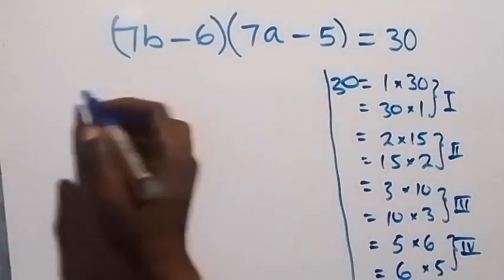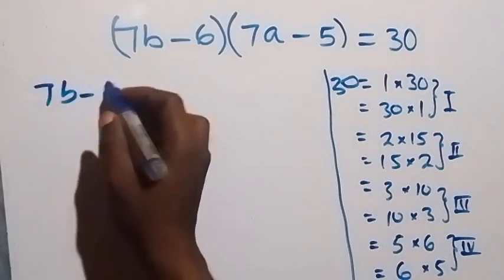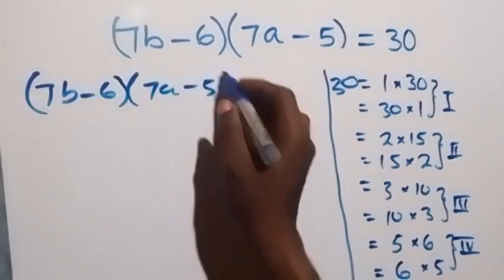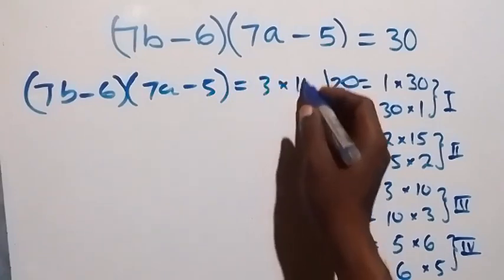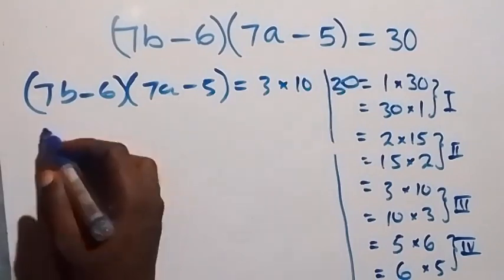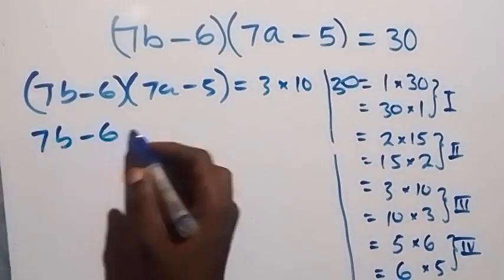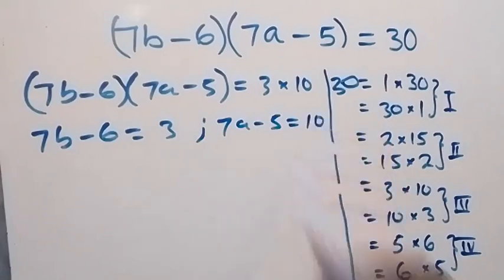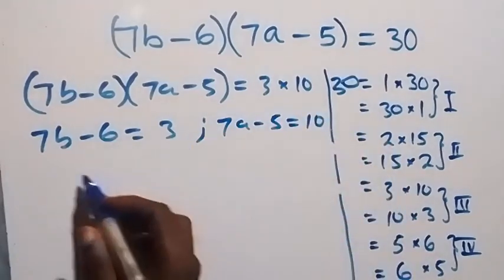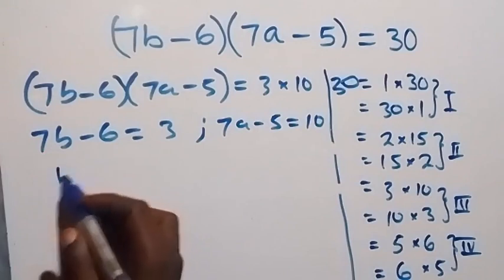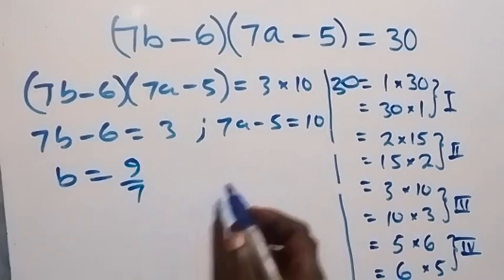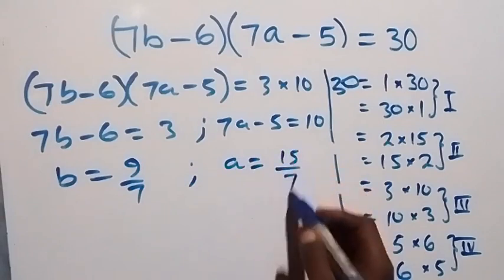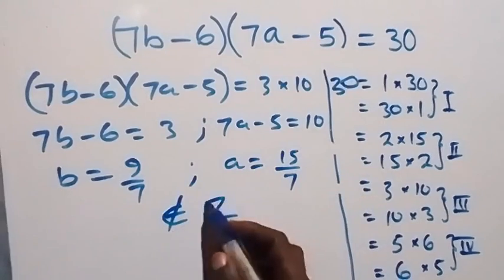For Case 3 with 3 times 10: (7b minus 6) times (7a minus 5) equals 3 times 10. We equate 7b minus 6 equals 3 and 7a minus 5 equals 10. Solving gives b equals 9 over 7 and a equals 15 over 7 — both are not members of the integer solution.